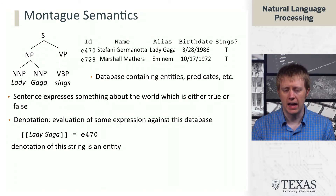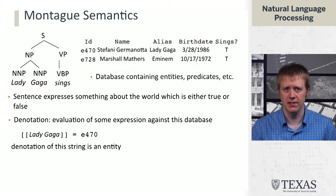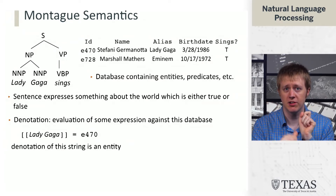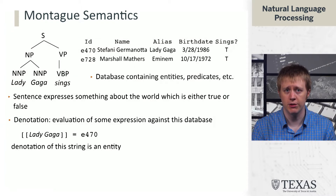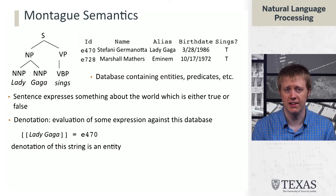One additional element we need to introduce is being concrete about the entities we're talking about. Lady Gaga in the sentence is just a string — it's not a pointer into the database. So you have this entity resolution problem that you need to solve as well. The denotation of 'Lady Gaga' we're going to represent as E470 — an ID that you should think of as a pointer into this database. The denotation of that string is just this entity pointer.